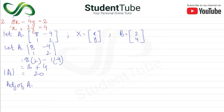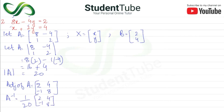The adjoint of A is the matrix with values 2, 4 in the first row and minus 1, 8 in the second row. Therefore, A inverse equals 1 over 20 times the adjoint matrix: 1/20 times [2, 4; -1, 8].